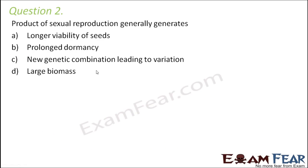Question number 2: The product of sexual reproduction generally generates — longer viability of seeds, prolonged dormancy, new genetic combination leading to variation, or large biomass. In sexual reproduction, the most unique thing is that new traits are introduced. The new organisms formed are not exact copies of the parents but a blend of both, with some new traits as well. So new genetic combination leading to variation is the best option.